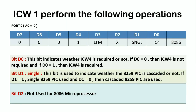Now we will see the operation of Initialization Command Word 1, ICW1. The first bit is D0, which indicates whether ICW4 is required or not. If D0 equals 0, there is no need for ICW4. If D0 equals 1, then ICW4 is required.